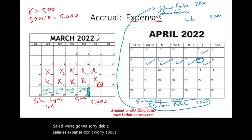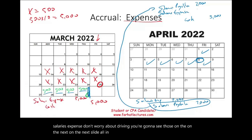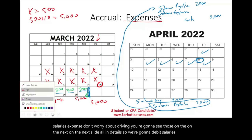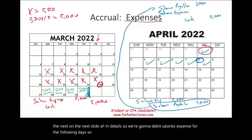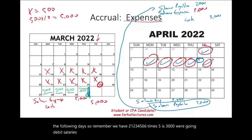We need to debit salaries expense for the following days. Remember, we have 6 new days at $500 each — 6 times $500 is $3,000. So we debit salaries expense $3,000, debit salaries payable $2,000, and credit cash $5,000.